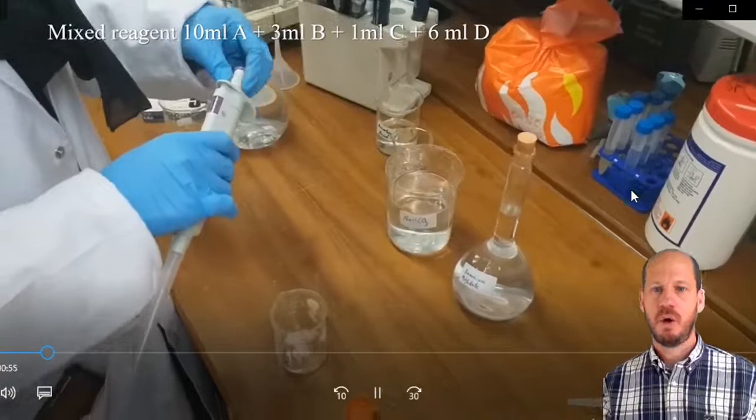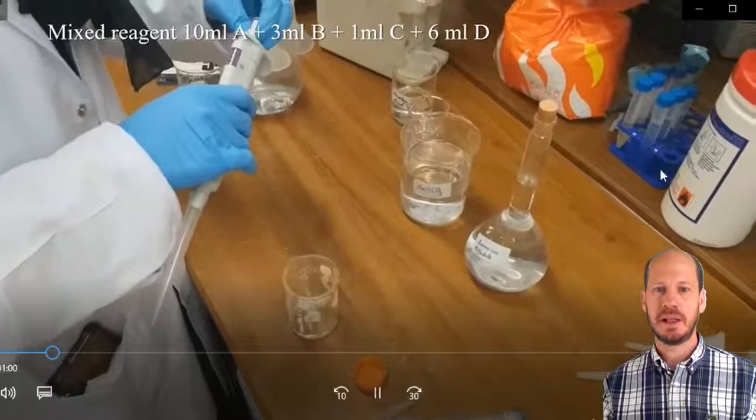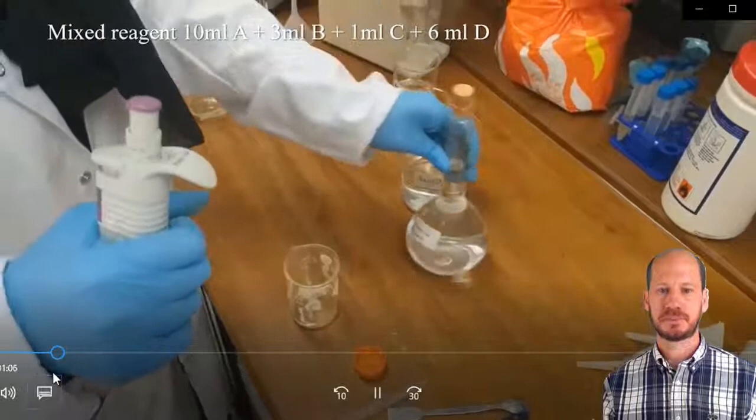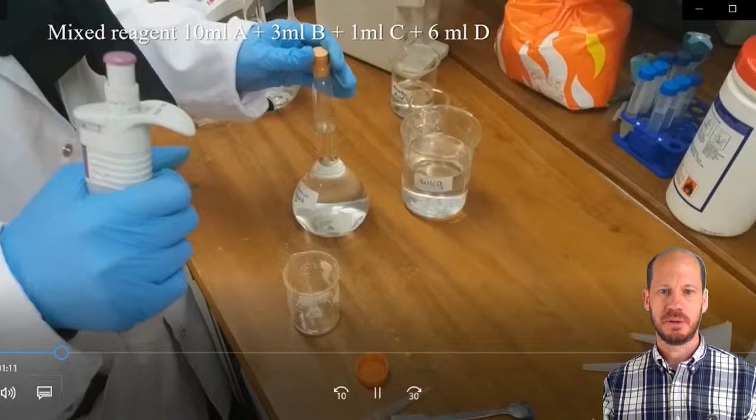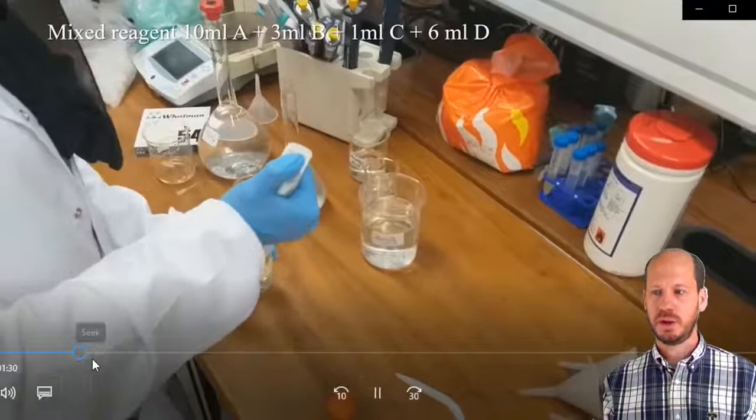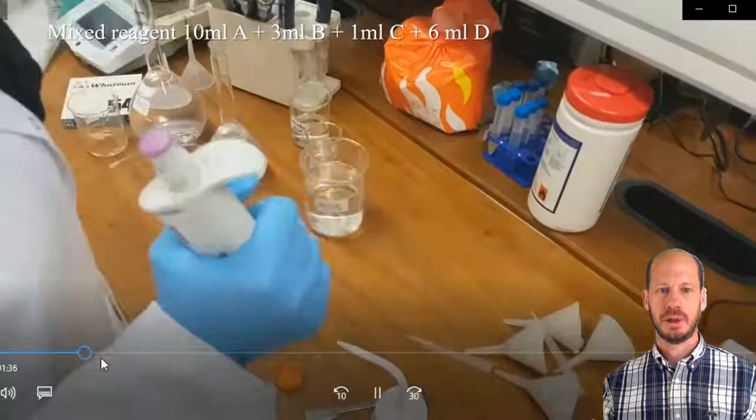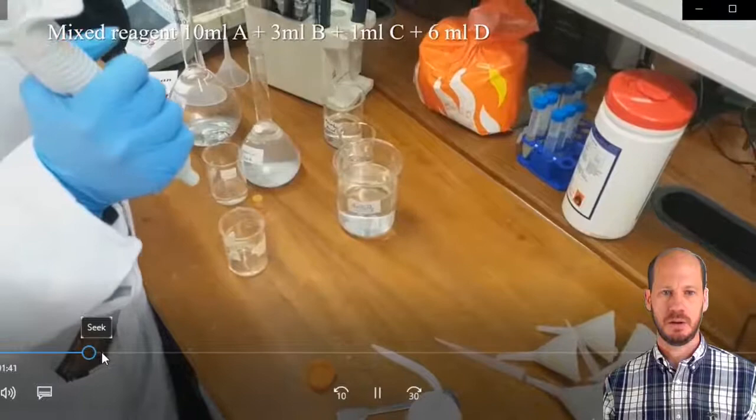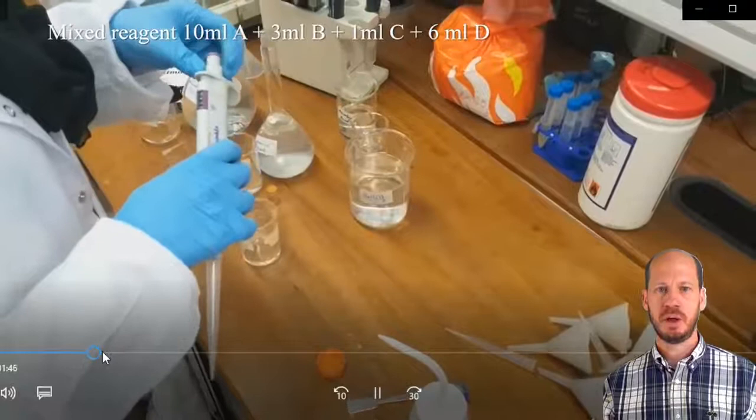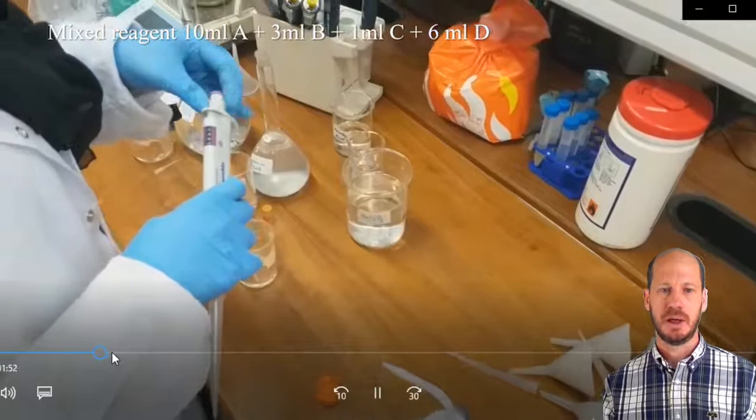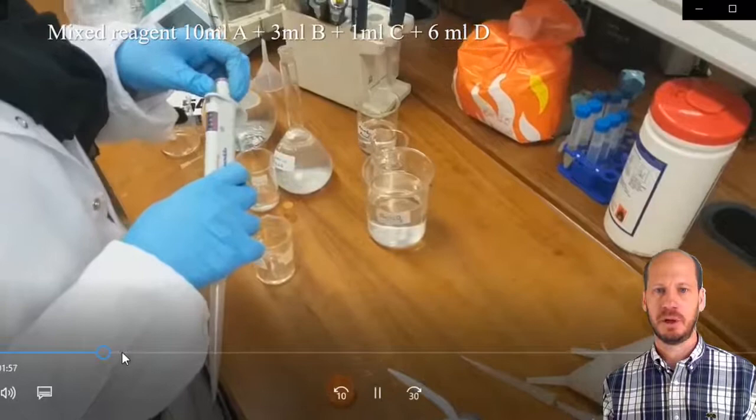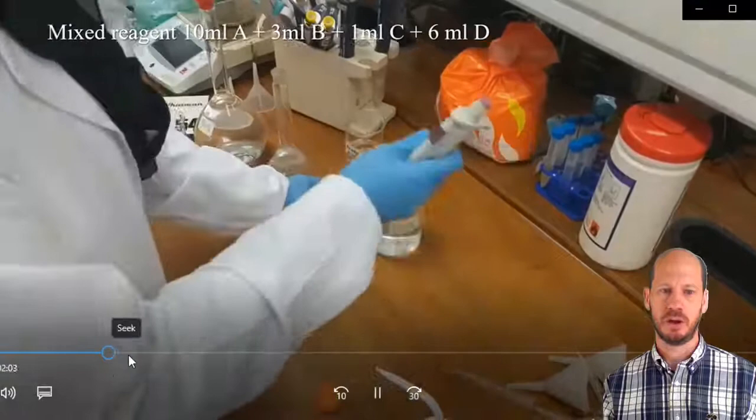The other solutions you can prepare before and keep in the fridge or protect from light, and it will last for months. But the ascorbic acid will spoil, so it's important that you always dissolve solution D on the day you're measuring. Here is Lilua pipetting each solution and making this mixed reagent. It has to be in this order: the acid first, then the ammonium molybdate, then the ascorbic acid. Otherwise, it will not work properly.